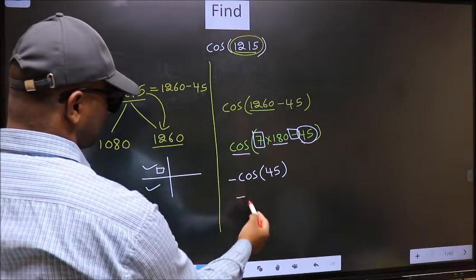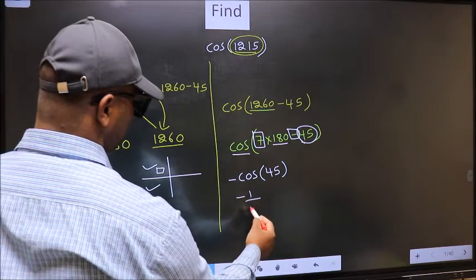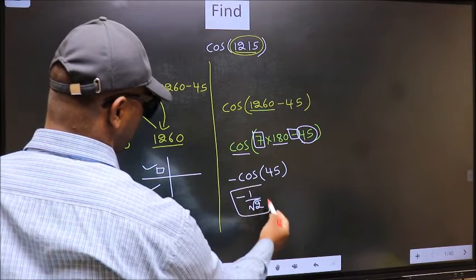So we should put negative. So negative cos 45 is 1 by root 2. This is our answer.